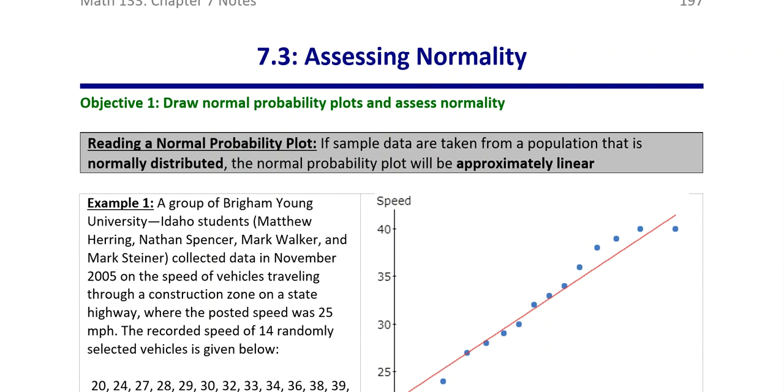Since we have such powerful tools as normal CDF and inverse norm at our disposal, it's going to be very important for us to be able to determine quickly whether or not our sample data came from a population that was normally distributed. Because if it was normally distributed, then we would be able to use those tools, normal CDF and inverse norm, if we so desired.